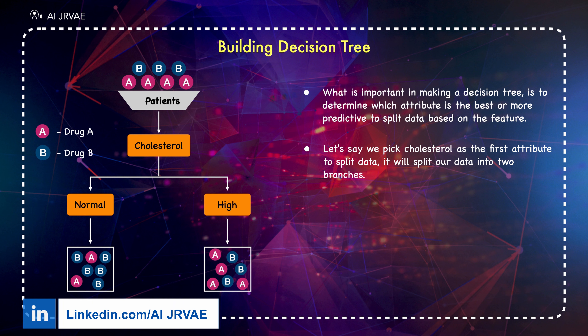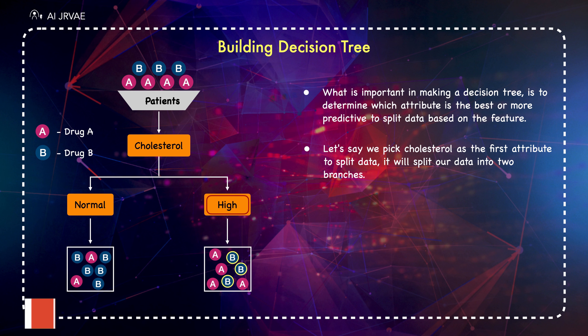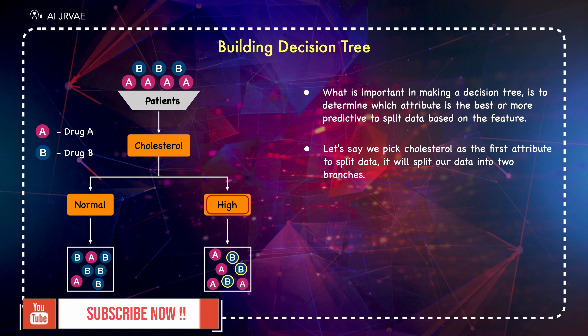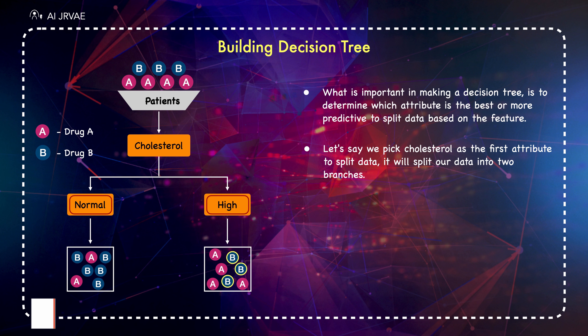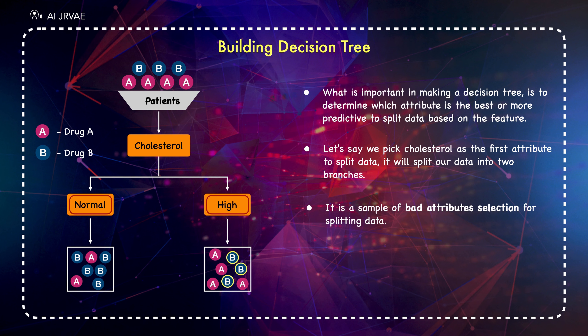As you can see, if the patient has high cholesterol, we cannot say with high confidence that drug B might be suitable for him. Also, if the patient's cholesterol is normal, we still don't have sufficient evidence or information to determine if either drug A or B is in fact suitable. This is a sample of bad attribute selection for splitting data.